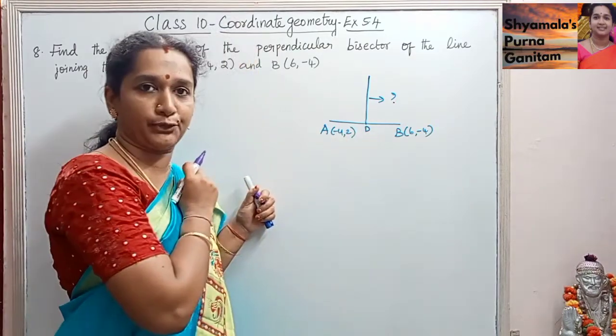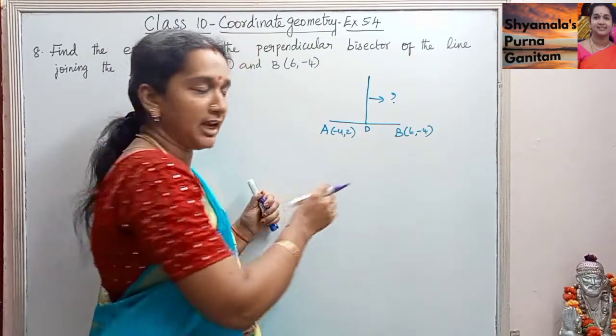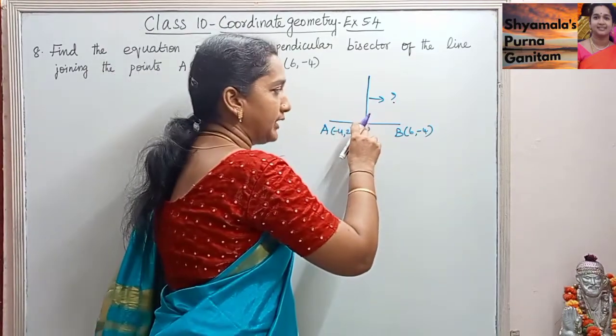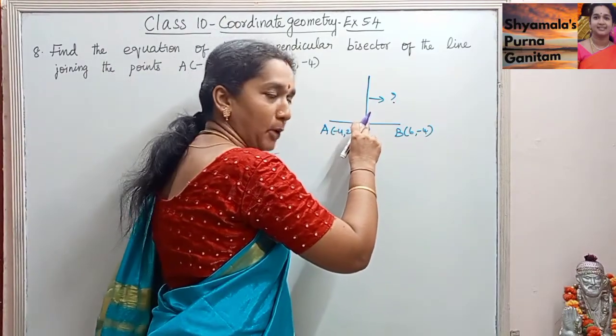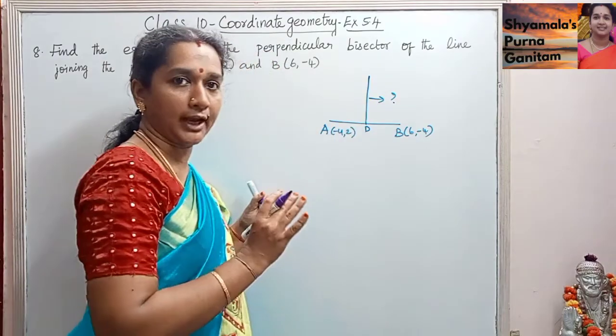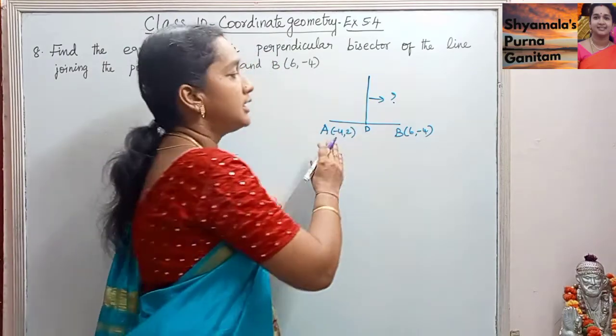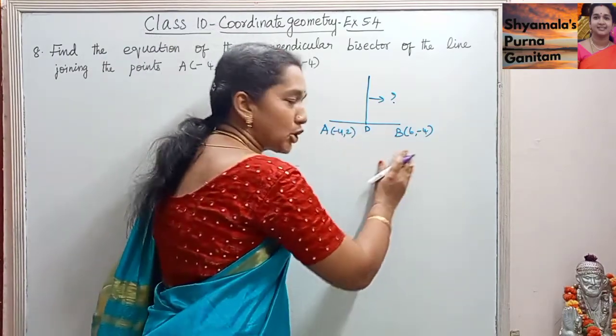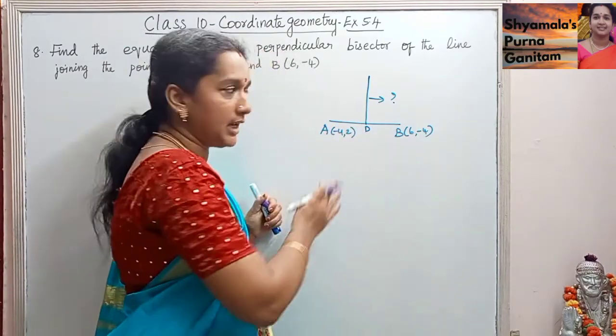Here, D is the midpoint of AB. So we will find the midpoint and we will get the coordinates of X and Y. Then we will find the slope of AB.